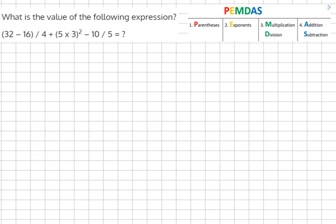We'll start off with the two parentheses. 32 minus 16 equals 16 over 4 plus 5 times 3 equals 15 squared minus 10 over 5.